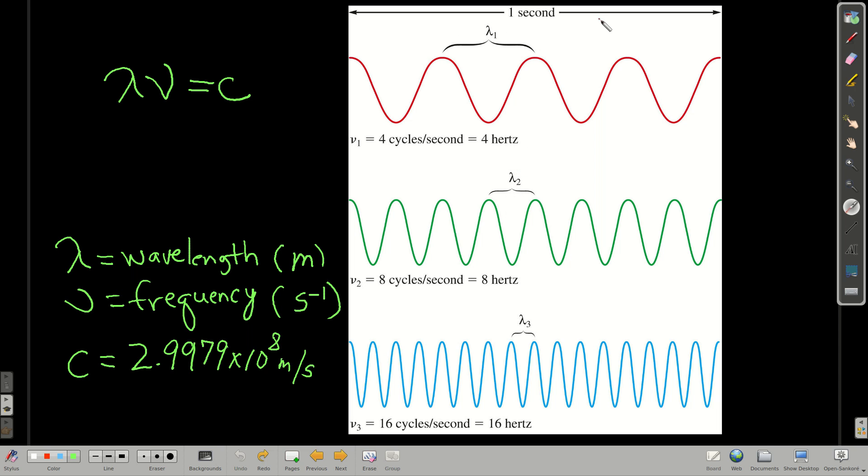If it takes this wave one second to travel this distance from one edge of this white area to the next, then the number of peaks or troughs that pass that are in that region is the frequency. So this one would have four, from here to here is one, two, three, four cycles, or peaks, and thus its frequency would be four hertz, or four per second. A hertz is the same as one over seconds.